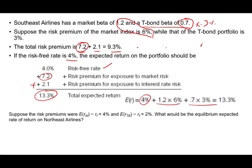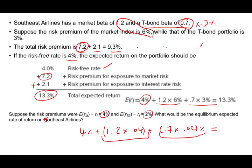Now let's change the example and assume the market has a risk premium of 4% and the T-bond has a risk premium of 2%. The risk-free rate stays the same at 4%. We're not changing the betas, only the risk premiums. So it's 1.2 times 0.04 plus 0.7 times 0.02. If we perform the computation, we come up with 10.2%. Notice beta stayed the same — what was reduced is the risk premium. Obviously, if your risk premium goes down, your return will go down. This is a two-factor model.